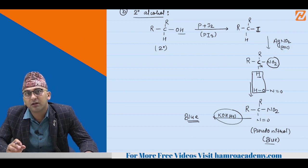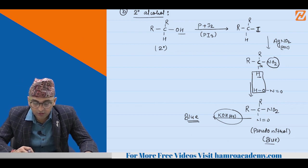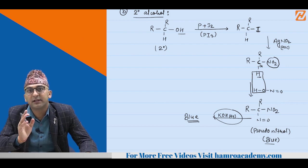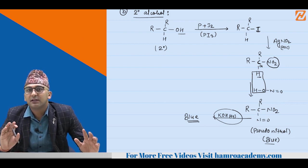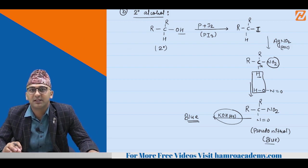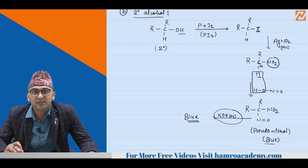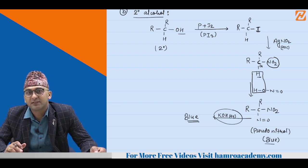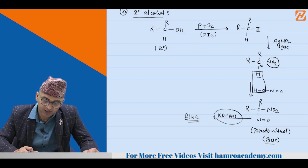The blue color in the Victor Meyer test for secondary alcohol is due to pseudonitrol, and the red color for primary alcohol is due to nitrolic acid. Red color is due to nitrolic acid; blue color is due to pseudonitrol.